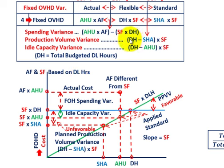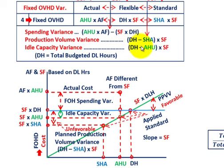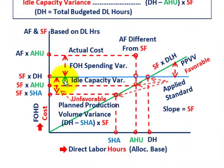The production volume variance was denominator hours versus actual hours used versus the standard fixed rate. Our planned production volume variance: standard fixed rate times denominator hours versus standard fixed rate times standard hours allowed. Then our idle capacity variance — denominator hours versus actual hours used, that difference times the standard fixed rate. Standard fixed rate times denominator hours versus standard fixed rate times actual hours used — that idle capacity variance shown in green.